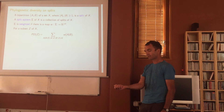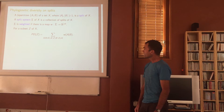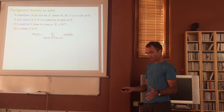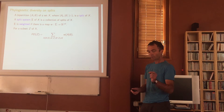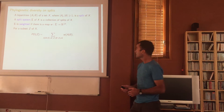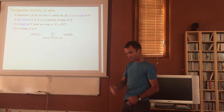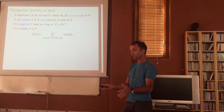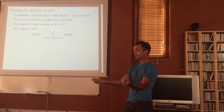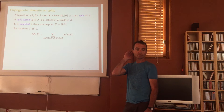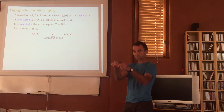I've got a collection of bipartitions of X with non-zero weightings. The PD score of a subset Z of X sums up the weights of those splits that have a non-empty intersection on both sides. So Z contains something with wings and something without wings. But if it only contains everything with wings and that was one of my splits, I'd ignore that split — it's not going to give any value. I want things to be spread across the split, because I want diversity: wings and no wings.